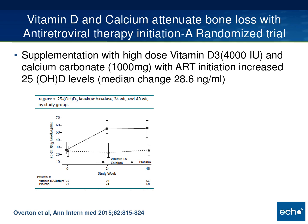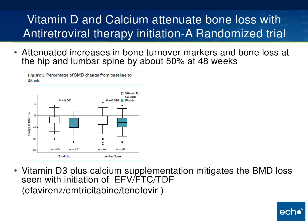Supplementation with high-dose vitamin D3 increased the 25-hydroxy vitamin D levels by a median of about 28.6 nanograms per month. The graph shows the dotted placebo lines versus the levels reached with vitamin D and calcium. There was a small decrease in bone density in both groups, but the rate of decline in bone density—both in the hip and spine—was far less with vitamin D and calcium supplementation, with about 50 percent more bone loss in the placebo group. This demonstrates that high-dose vitamin D3 with calcium supplementation can mitigate bone loss when this treatment is initiated.